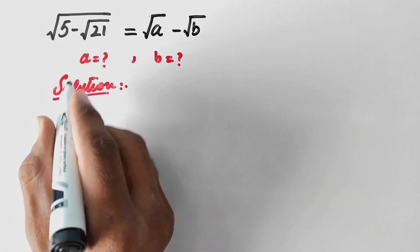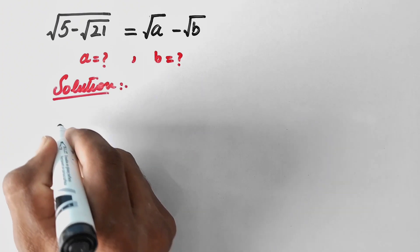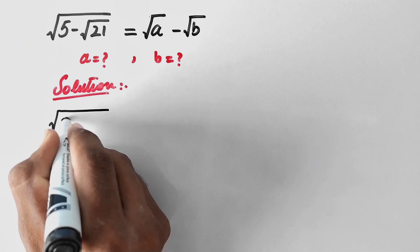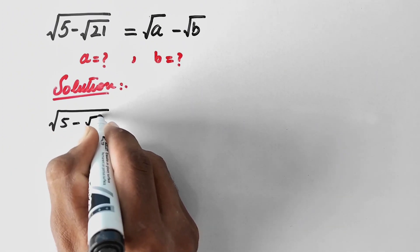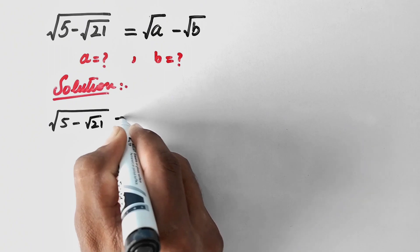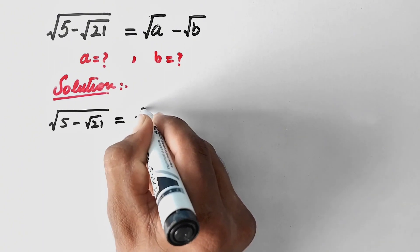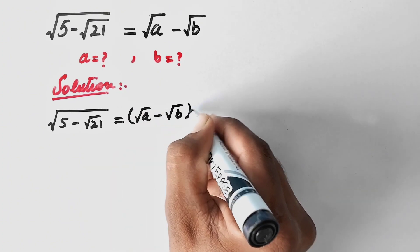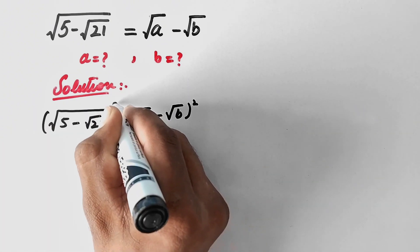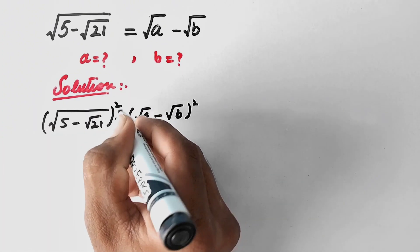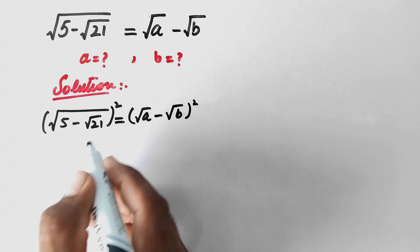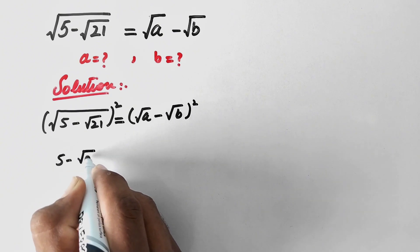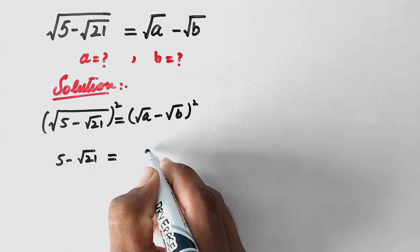In the first step, we will take the square on both sides of the equation. It will be √(5 - √21) = (√A - √B)². The square root on the left will be cancelled by the square, and we are left with 5 - √21 on the left-hand side.